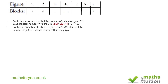The general rule: for figure n, find the total number of cubes in the bottom layer — which is 2n² minus 2n plus 1 — then add the total number of cubes in figure n minus 1. Using this, we can fill in the table: figure three has 19 cubes, figure four has 44, figure five has 85, and figure six has 146.